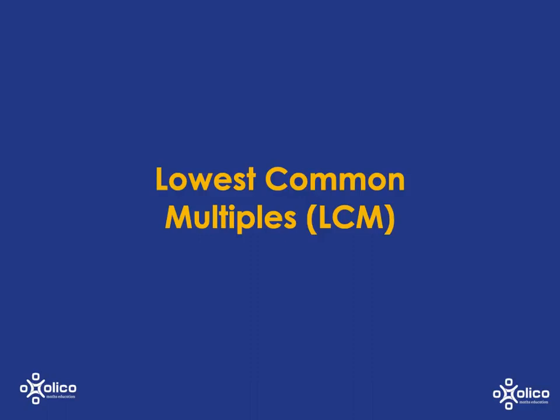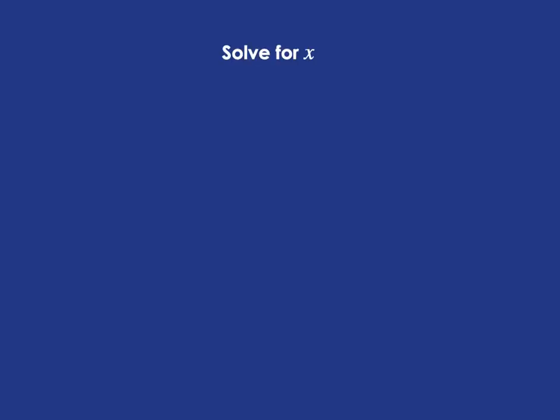We're going to do a quick recap of finding the lowest common multiple. The reason is that we're going to start solving equations that have a whole lot of fractions in them, and we're going to want to get rid of those fractions. The most efficient way to do that is to multiply through by the lowest common multiple of the denominators. So let's quickly recap finding that, and then we'll show you how to use it to solve the equations.